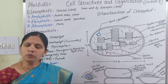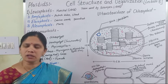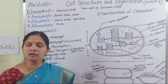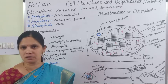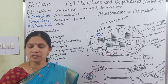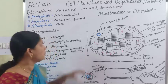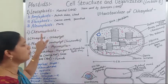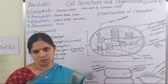Depending upon which type of pigment is present in these plastids, there are three main types: Leucoplasts, Chromoplasts, and Chloroplasts.